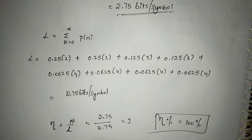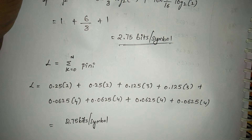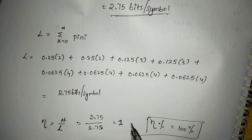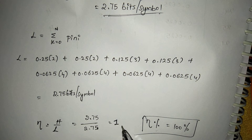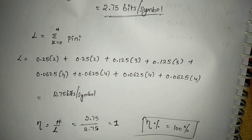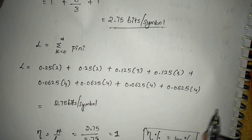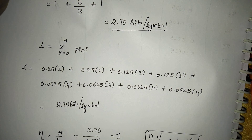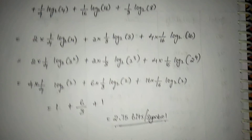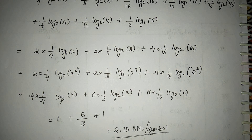Remember that the efficiency value must not exceed 1. It may be below 1, but it should never exceed 1 because efficiency cannot be greater than 100%. If you get a value above 1, the process is wrong and you must recheck everything. That's it for Shannon-Fano coding. I'll also make a video on Huffman coding and more examples on Shannon-Fano coding. If you liked the explanation, please like, share, subscribe, and press the bell icon for instant notifications. Thank you for watching.